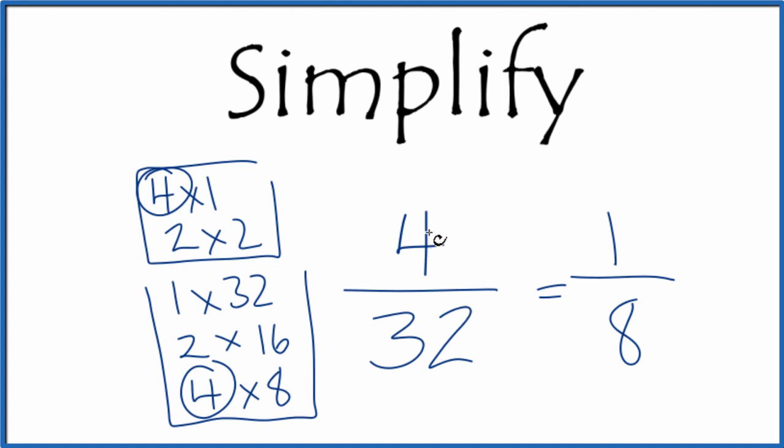And these are equivalent fractions. If you divide 4 by 32 and 1 by 8, you'll get the same value. It's just that we've reduced this fraction here 4 32nds down to 1 eighth, and we can't reduce it any further.